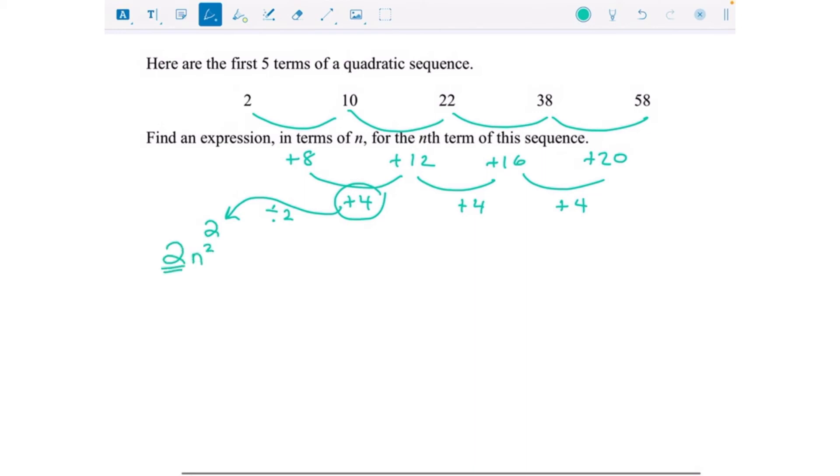The number in front of n squared is going to be a 2, always half of the second difference. That means on this question we're going to need to do our square numbers but then double them because of that 2 out the front. 1 squared is 1 but double it and you get 2. 2 squared is 4 but double it and you get 8. 3 squared is 9 but double it and you get 18. 4 squared is 16, double it you get 32, and 5 squared is 25, double it is 50.